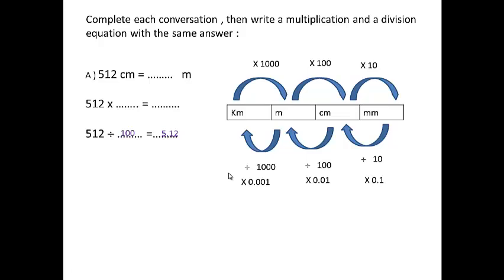Complete each conversion, then write a multiplication and a division equation with the same answer. This is a metric system chart for length: kilometer, meter, centimeter, millimeter — from big to small. From big to small we multiply: kilometer to meter multiply by 1000, meter to centimeter multiply by 100, centimeter to millimeter multiply by 10. From small to big: millimeter to centimeter divide by 10, or multiply by 0.1.